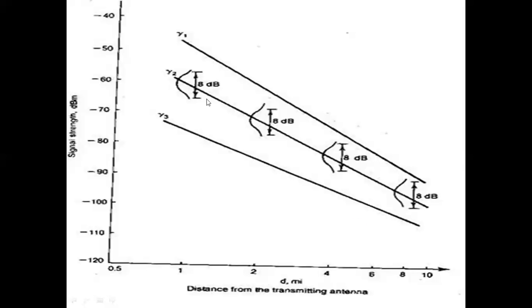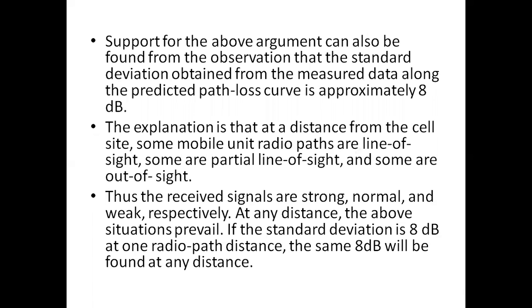Because of all these reasons - close-in structures when near, and variation along different radio paths when far - we get the same standard deviation whether the mobile unit is closer to or away from the cell site. This is the constant standard deviation of 8 dB. Thank you.